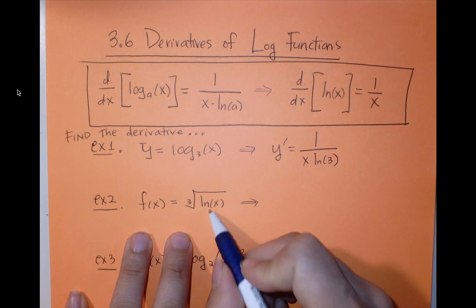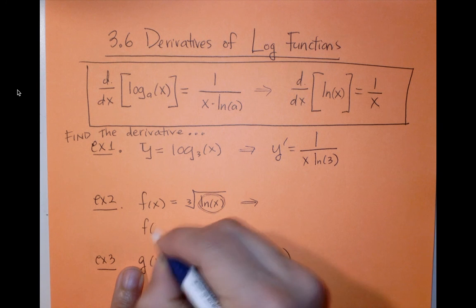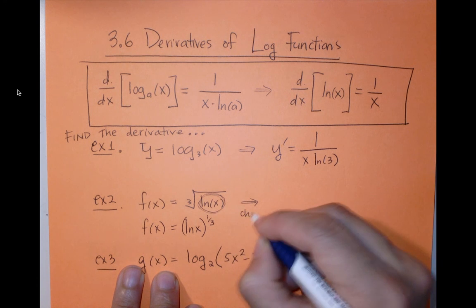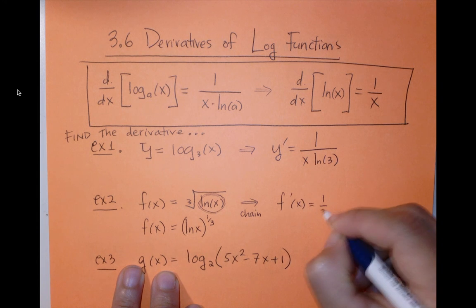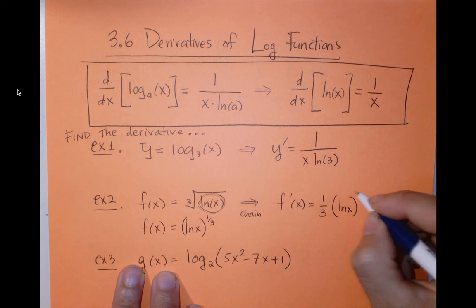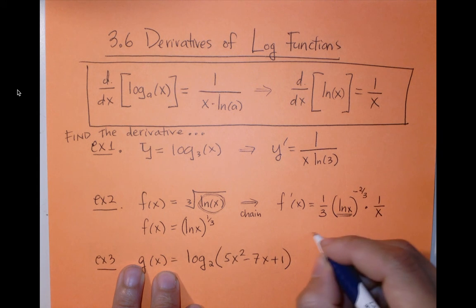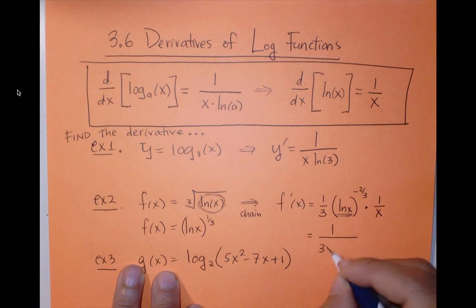Here we are going to have to use the chain rule. Here's my inside function. I can see f of x is ln x to the 1 third. So using the chain rule, I have f prime of x is 1 third my inside function to the negative 2 thirds times the derivative of the inside function, which we know is 1 over x. So cleaning this up a little bit, I get 1 over 3x times the cube root of ln x squared.